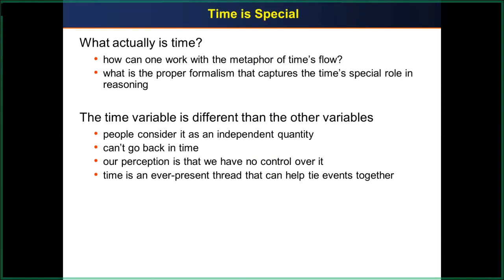On the other hand, because you can't go back, time is a good way to order things together. You can really tie things together along a timeline. A timeline is a good way to bring some order to certain events, even though you don't always know what came first because of the time-space relationship. Nevertheless, time is a special variable that can help bring order to certain events.